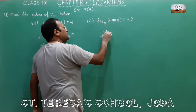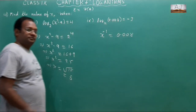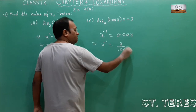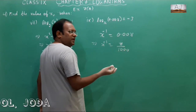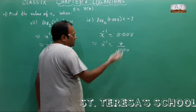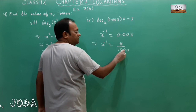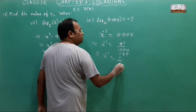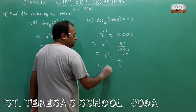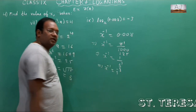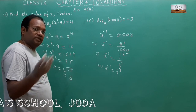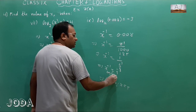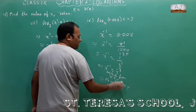Now for this one, convert to exponential form: x to the power minus 3 equals 0.008. Now 0.008 equals 1 by 125, and 1 by 125 is 1 by 5 to the power 3, which equals 5 to the power minus 3. So x to the power minus 3 equals 5 to the power minus 3. Since the powers are equal, the bases must be equal, so x equals 5.